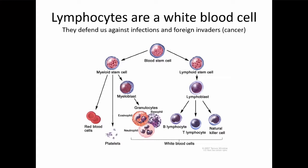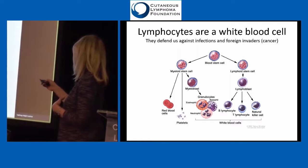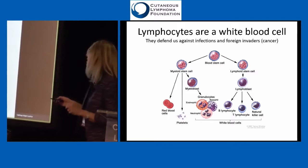A little bit of a review from Dr. Wood's talk. Lymphocytes are a white blood cell. Their normal job is to defend us from different types of germs, viruses in particular, and they also protect us against cancers — they help kill off abnormal cells that happen as a normal part of cells growing and dividing. They come from the bone marrow, where all blood cells start. They start as a stem cell, and one thing they can become are these lymphoid cells.